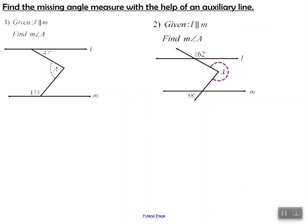So let's work out a couple of example problems using an auxiliary line to find missing angle measures. In problem one, we are given that L is parallel to M, and we have to find the measure of angle A. We see these two transversals, so we can't apply the postulate and theorems we know. So I'm going to go ahead and add a third line that is parallel to the ones we already have.